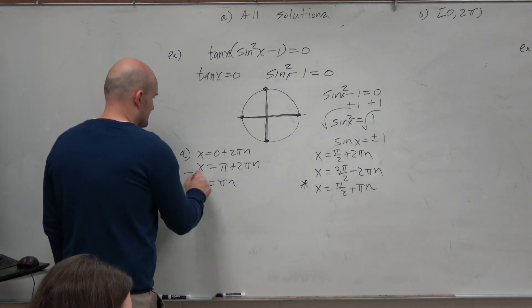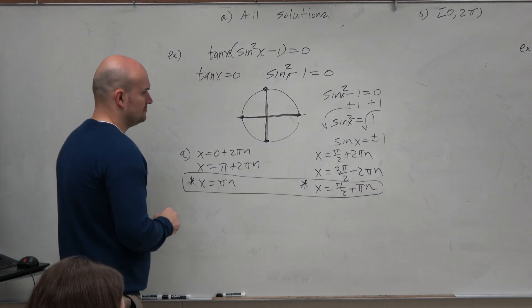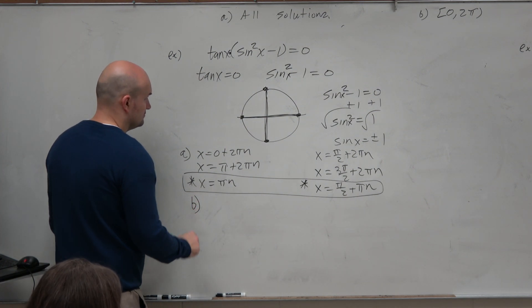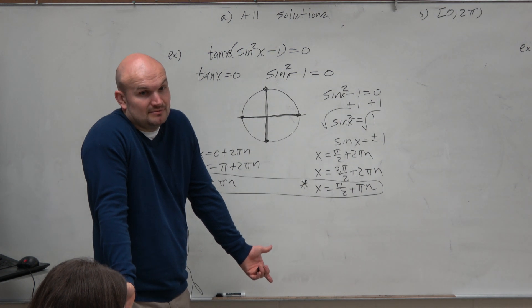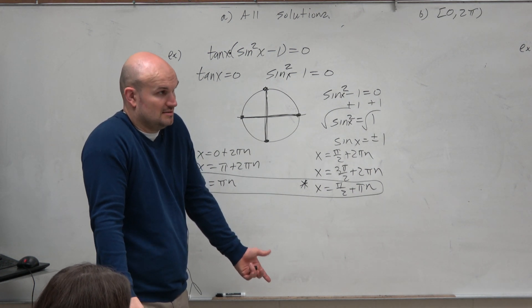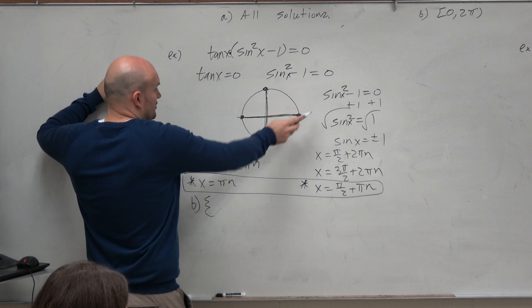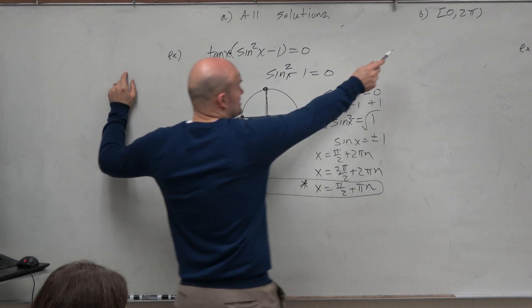So for answer A, that's what I would give. Now for answer B, we just want you to find the answers between 0 and 2π, right? Yes? Yes. So I'll write this as a solution set. Is 0, so 0 is in there. Is 0 included between 0 and 2π?